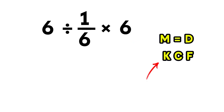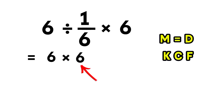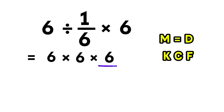Now let's apply the KCF rule. Keep 6 as 6, change division to multiplication, and flip 1 over 6 so it becomes 6. So now the whole thing becomes 6 times 6 times 6.